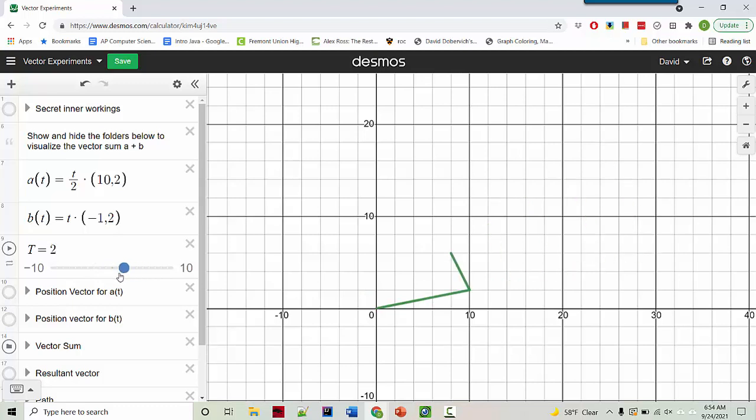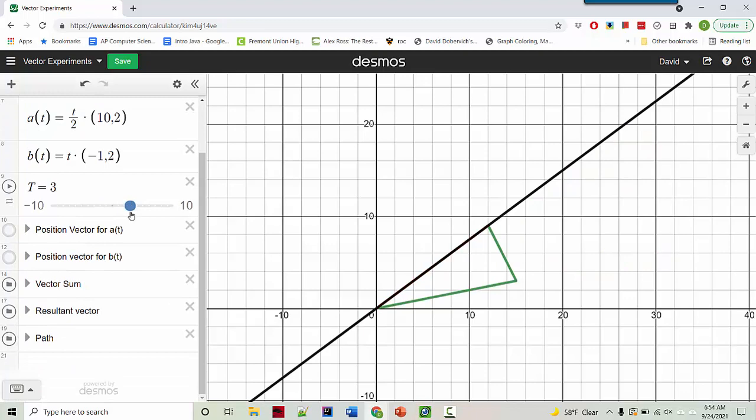Let's hide it. So here's the vector sum. So you see that the a vector is extending in its direction, and the b vector at the end is also getting longer. And so here's the resultant vector. So it seems like the resultant vector is still tracing out a line. And if we want to see the path, there's the path.